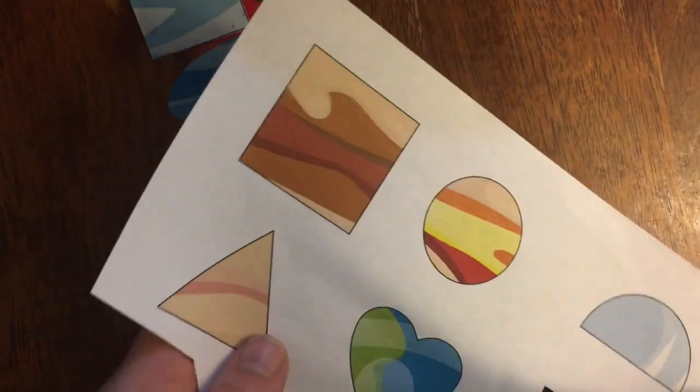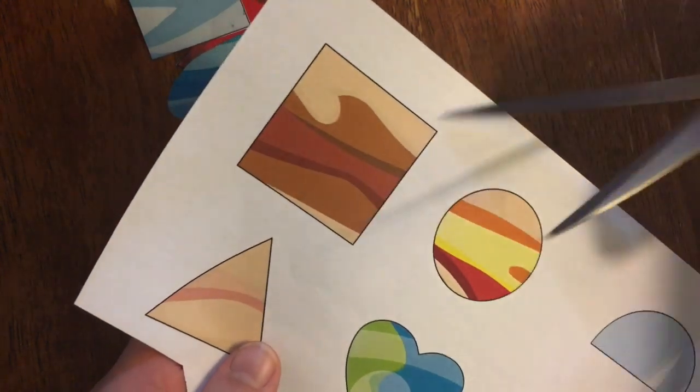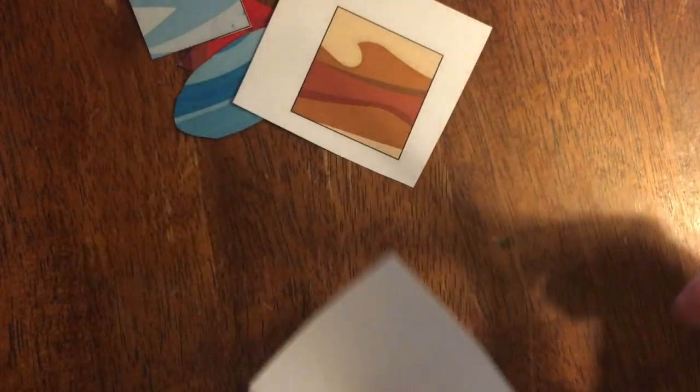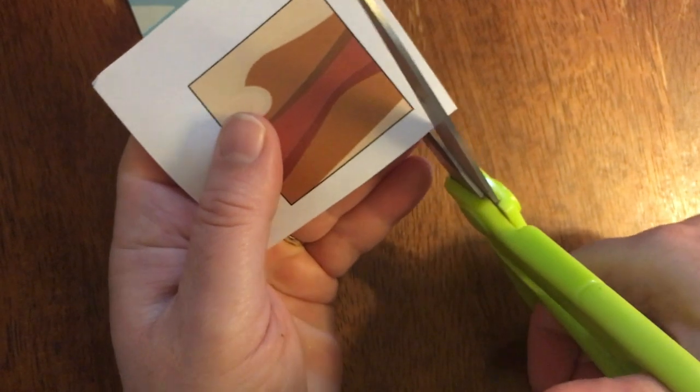Okay, here we go. Sometimes I like to cut around my shape first so that I can hold just that one shape and it would be easier for me to cut out because I can hold it closer.